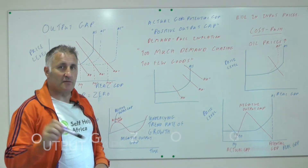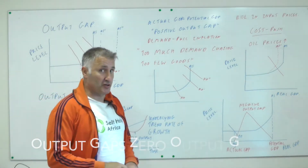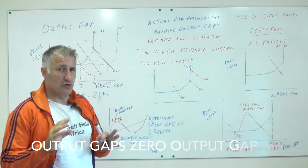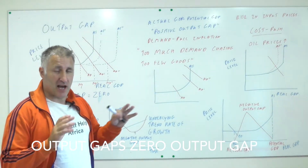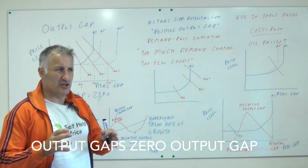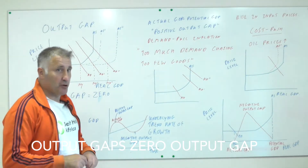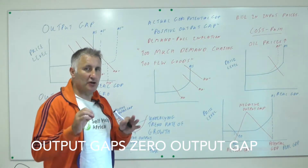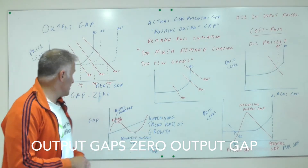This is lesson 55 part B, still on monetary policy. We're going to look at an idea called the output gap. The output gap, demand pull inflation, and cost push inflation — all of these things must become part of your economics. Ideally, you want the output gap to be zero in an economy.